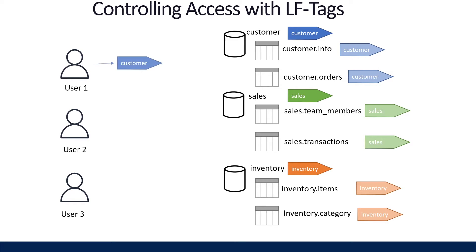Assigning user one the customer tag gives it access to the customer database and tables. We also want user one to have access to the sales database, so it gets the sales tag — now user one has access to both customer and sales databases. User two gets the sales tag for access to the sales database, and user three gets the inventory tag so it only has access to the inventory database.